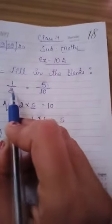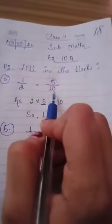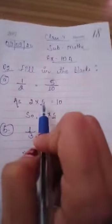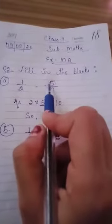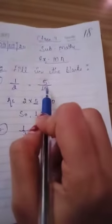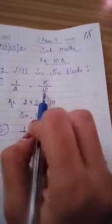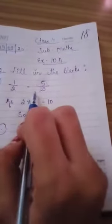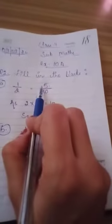Means jem hum denominator ko multiply karengi. Yahaan pere 10 kaise aega? 2 into 5 karengi to 10 aata hai. 2 fives are 10 hota hai. Tho usi digit se hum numerator ko bhi multiply karengi. 1 into 5. 1 fives are 5. Toh yahaan pere 5. Means jis digit se hum denominator ko equal karengi. 5 to fives are 10 hota hai. Usi digit se hum numerator bhi multiply karengi. Or humari numerator ki digit ajae gi.